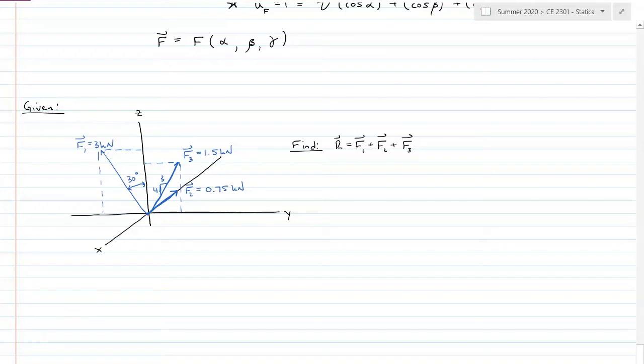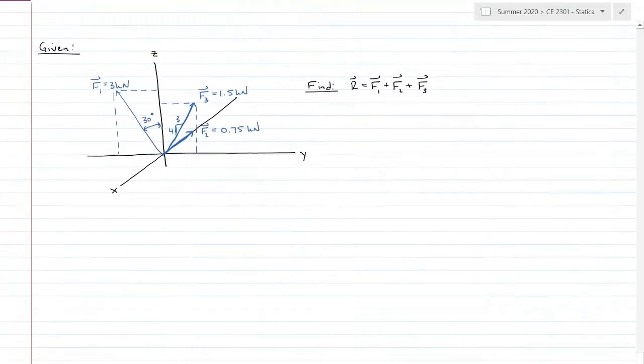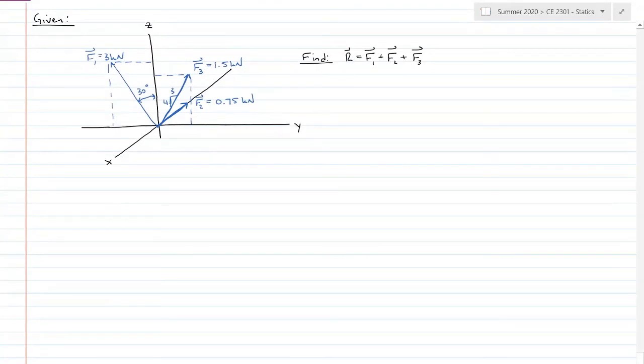I want that both in Cartesian format and magnitude and direction. First, I'll put everybody in Cartesian format. Force 1: it's entirely in the YZ plane, which means there is 0 for the i component. So I have negative 3 sine of 30 degrees j, and then plus 3 cosine of 30 degrees k.